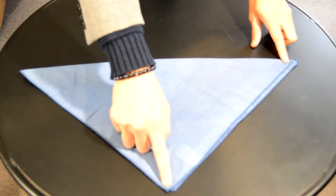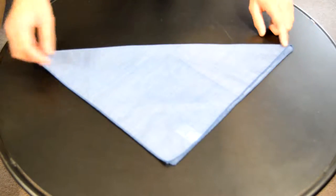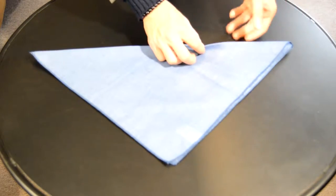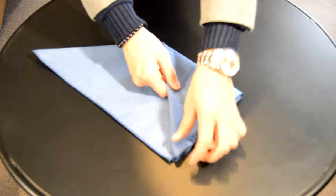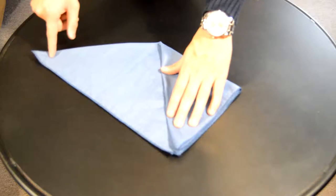After that, you're going to grab one of the triangle's ends and fold it to the bottom, then do the exact same thing with the other side.